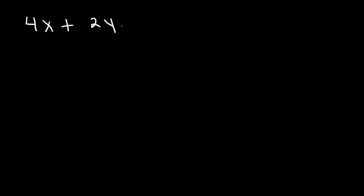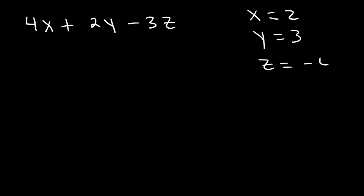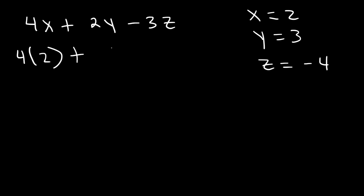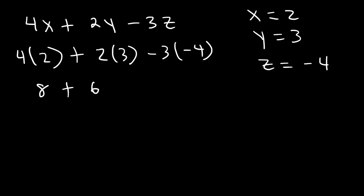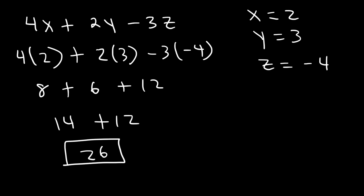Now, let's say we have an expression that contains variables: 4x plus 2y minus 3z. Let's say x equals 2, y equals 3, and z equals negative 4. Go ahead and evaluate this expression. We need to substitute — replace x with 2, y with 3, and z with negative 4. 4 times 2 is 8, 2 times 3 is 6, and negative 3 times negative 4 is positive 12. 8 plus 6 is 14, and 14 plus 12 is 26. That's how you evaluate an algebraic expression.